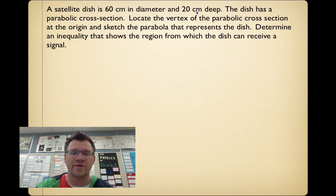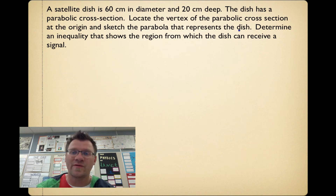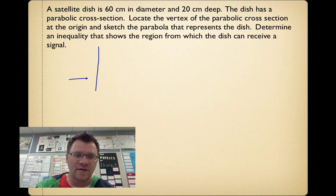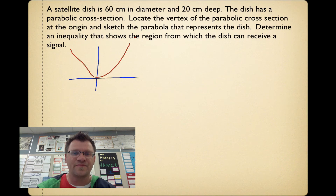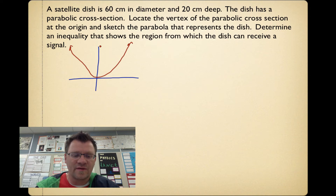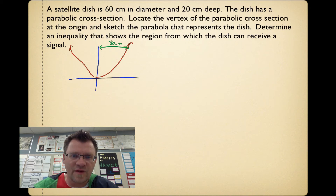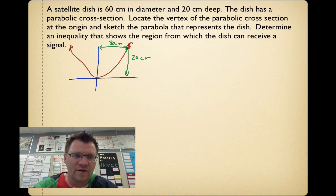A satellite dish is 60 centimeters in diameter and 20 centimeters deep. The dish has a parabolic cross-section. We locate the vertex of the parabolic cross-section at the origin and sketch the parabola representing the dish. The diameter of 60 cm means the dish extends 30 cm on each side from the vertex, and the depth of 20 cm means the parabola rises 20 cm from vertex to rim.